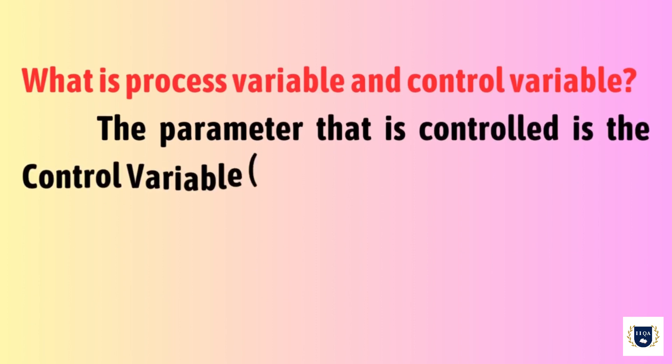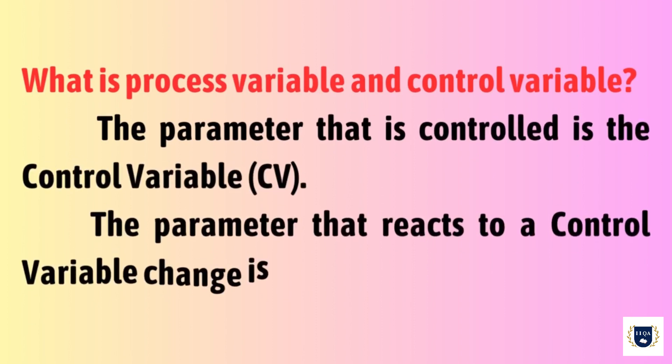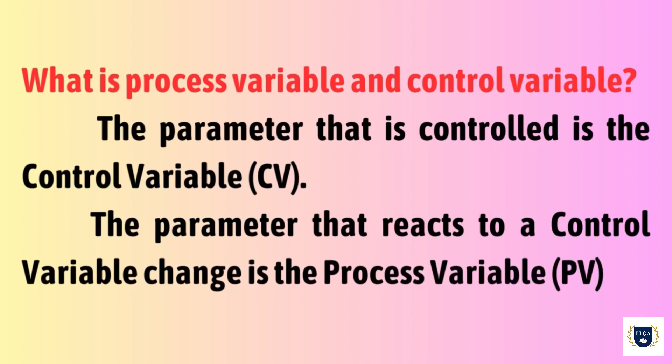What is process variable and control variable? The parameter that is controlled is the control variable (CV). The parameter that reacts to a control variable change is the process variable (PV).